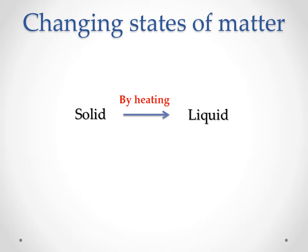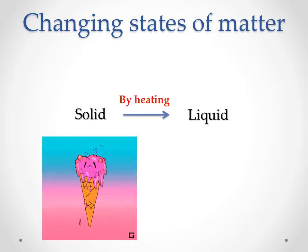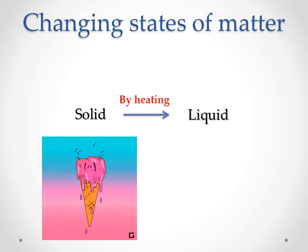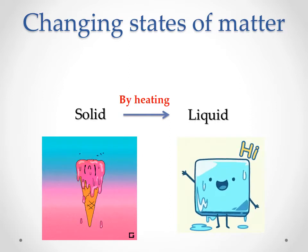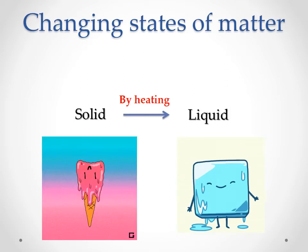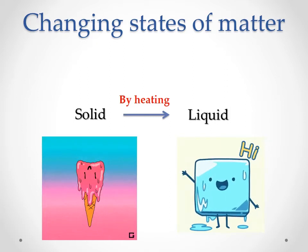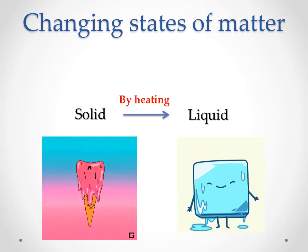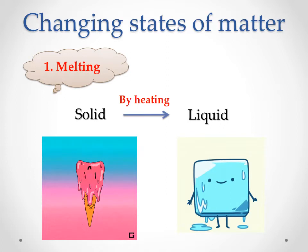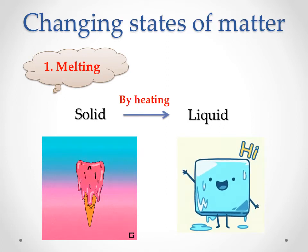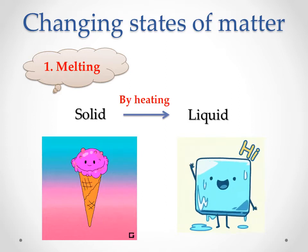Solid state changes to liquid state. Ask yourself: why does ice cream taken out of the freezer turn to liquid after some time? Or why does a cube of ice left out of the freezer turn to water? This is because the solid state changes to liquid state by melting. The ice cream and ice cube both begin to melt when left out.